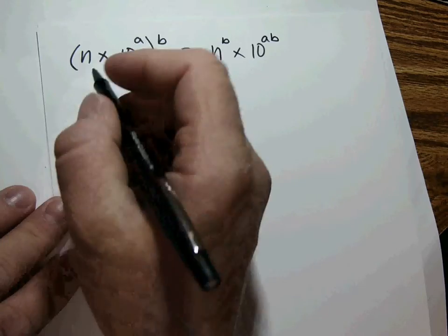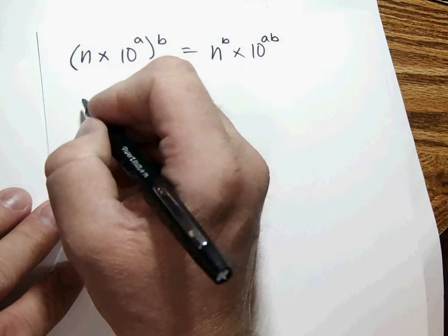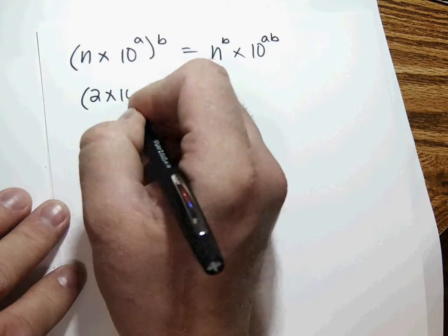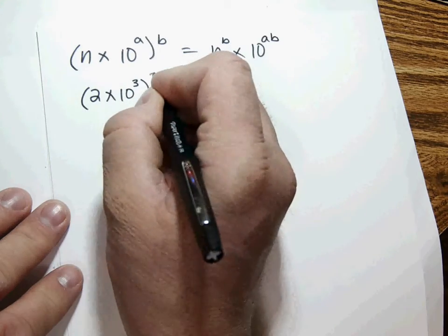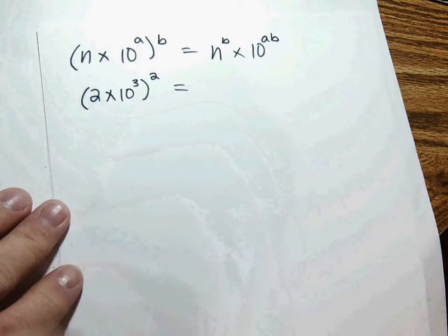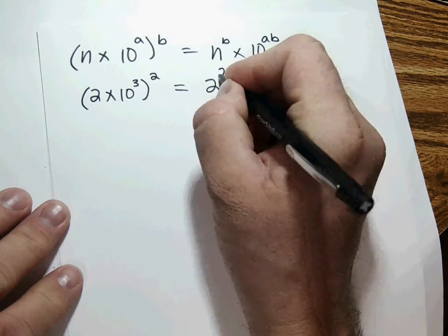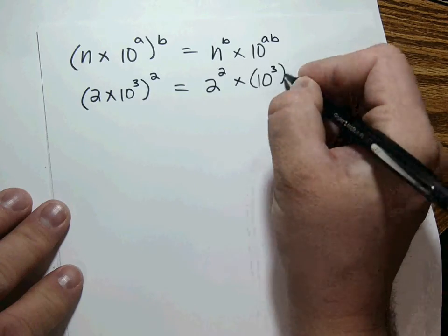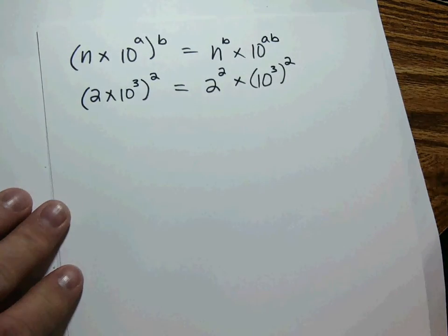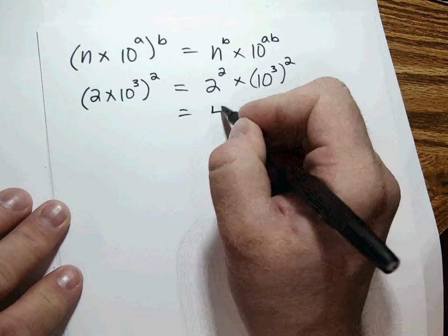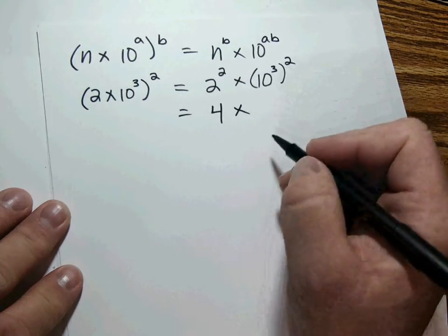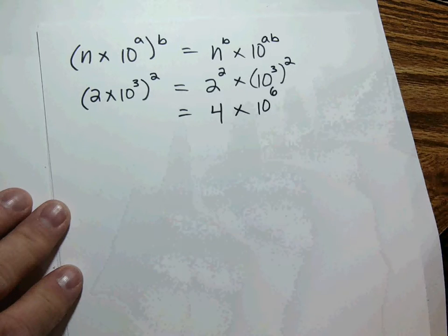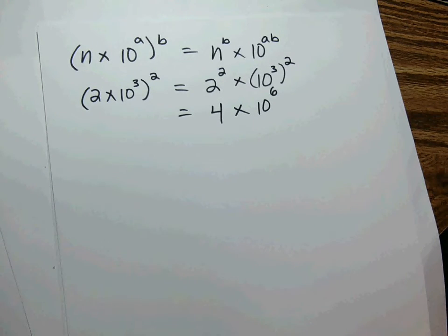Part A of Example 10: (2 times 10 to the 3rd) squared. Everything inside gets squared — 2 gets squared to give 4, and 10 to the 3rd gets squared to give 10 to the 6th. The result is 4 times 10 to the 6th power.